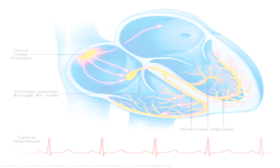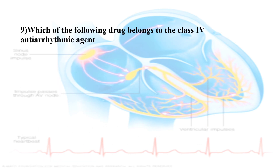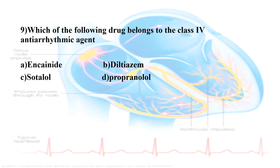Ninth question: Which of the following drugs belongs to the class 4 anti-arrhythmic agents? The options are: Option A, Encainide; Option B, Diltiazem; Option C, Sotalol; Option D, Propranolol. The correct answer is Diltiazem. Class 4 anti-arrhythmic agents are calcium channel blockers.